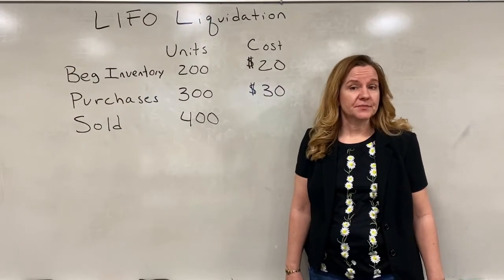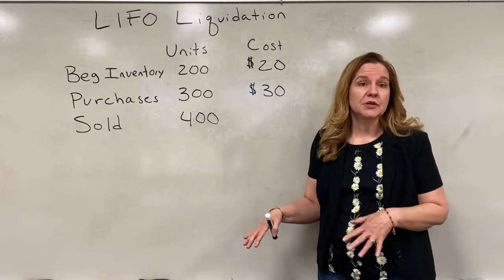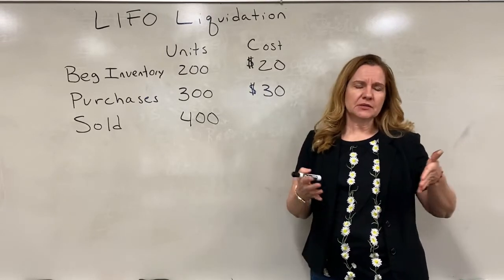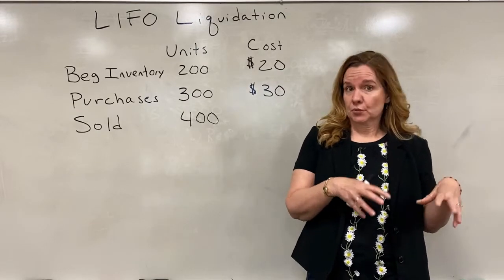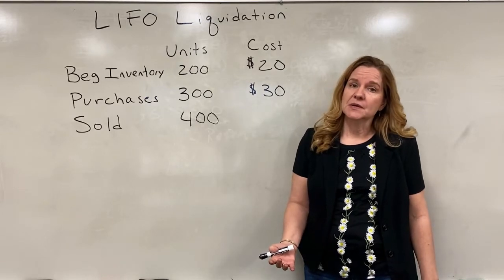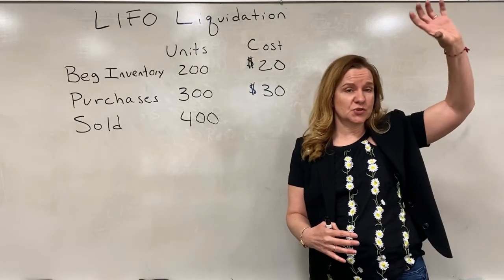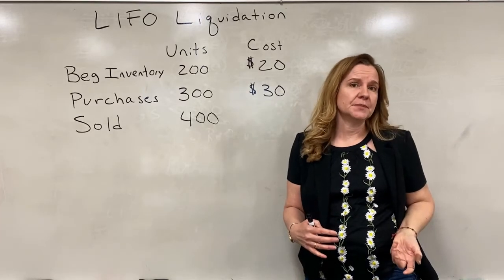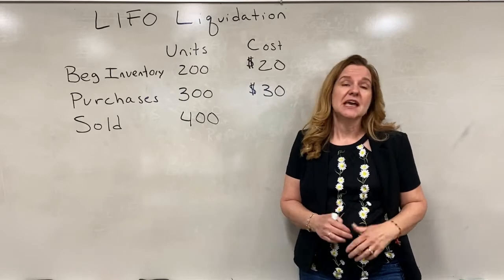Now we're going to go over LIFO liquidation. LIFO takes the newest costs into cost of goods sold — the last in are the first ones out — which causes a more accurate matching between sales and actual costs. However, from time to time when a company uses LIFO and has a huge number of sales, they could start going into the higher tiers, which are the lower-cost items. When that happens, we have something called LIFO liquidation. LIFO liquidation must be disclosed in the financial statements if it occurs and if it's material.